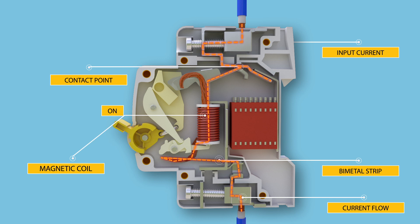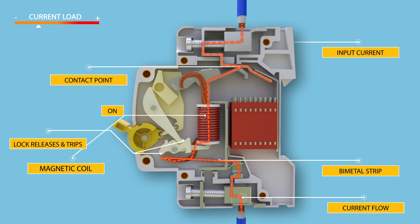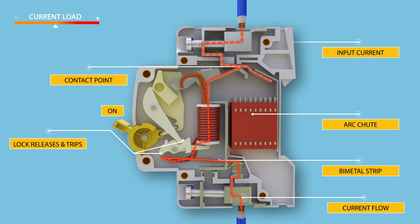Under overload conditions, the current through the bimetallic strip causes its temperature to rise. The heat generated within the bimetallic strip is enough to cause deflection due to the thermal expansion of metals. This deflection releases the trip latch and the contacts get separated. The visual indication of this trip can be observed by the automatic movement of the operator to the off position. During tripping, an arc is formed when the contacts start separating, and this arc is then forced into the arc chute plates.